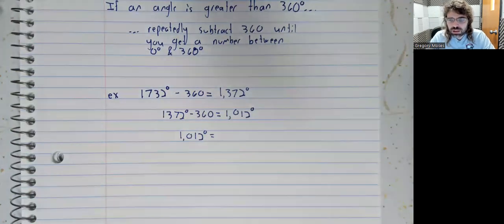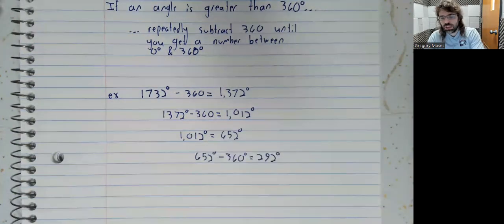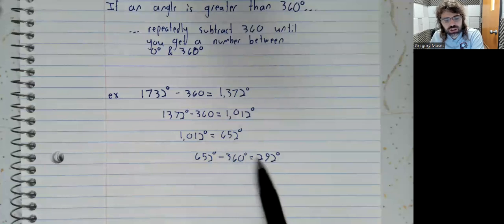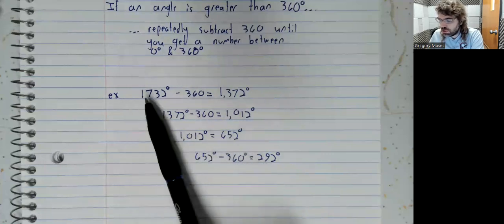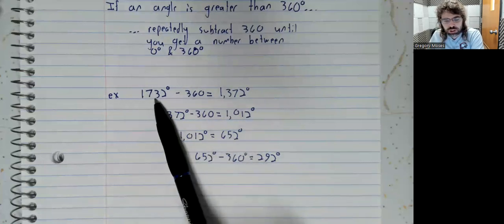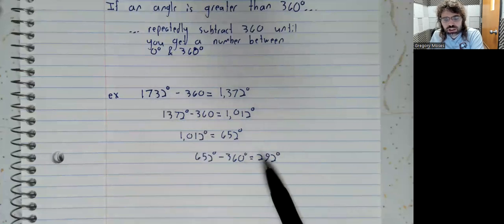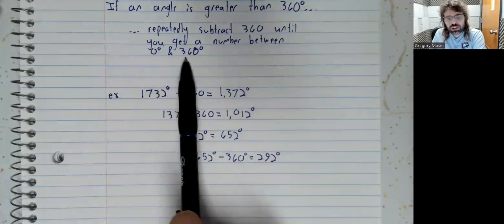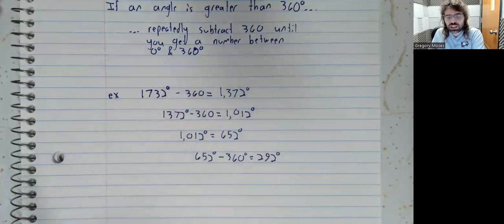Let me skip to the end. If we keep subtracting 360, we eventually wind up with 292. So, 1732 degrees and 292 degrees are co-terminal angles. And 292 is in this range we were interested in.